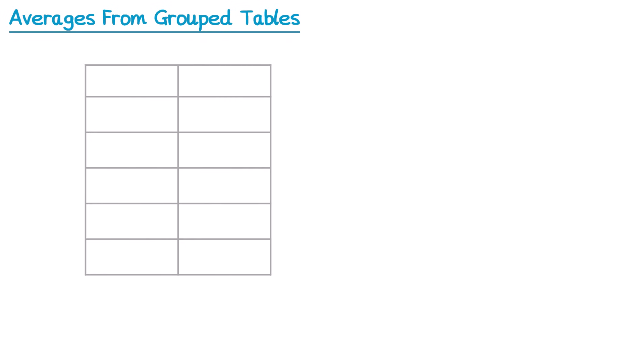So if we take a frequency table like this one here, and this one's going to be about people's heights, you can see that rather than having all of the individual possible heights, I've grouped them together. So if your height is between 140 and 150 you'll be in the first group. If it's from 150 to 160 you'll be in the second group and so on. So let's add in some frequencies and let's go through each of the averages and see how we calculate them, and it's going to be a little bit different to how we did it before.